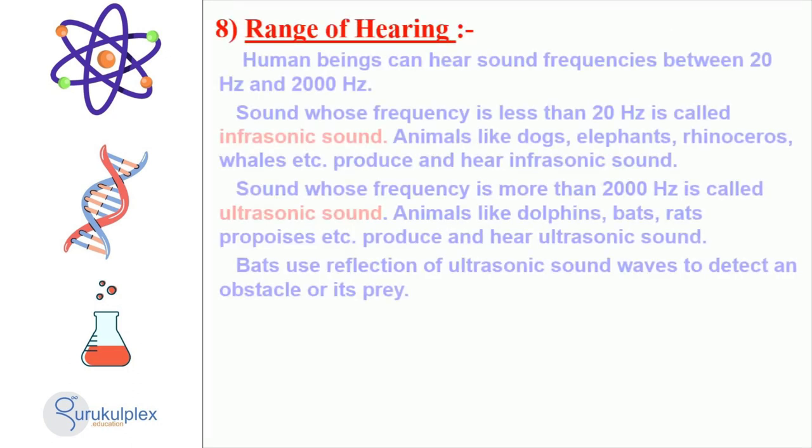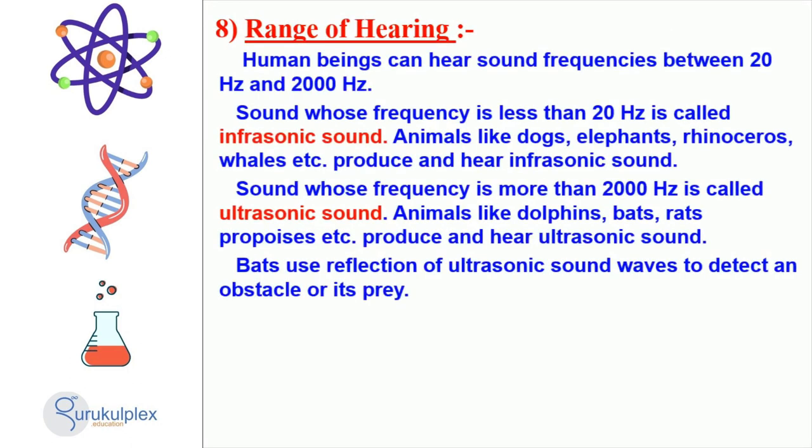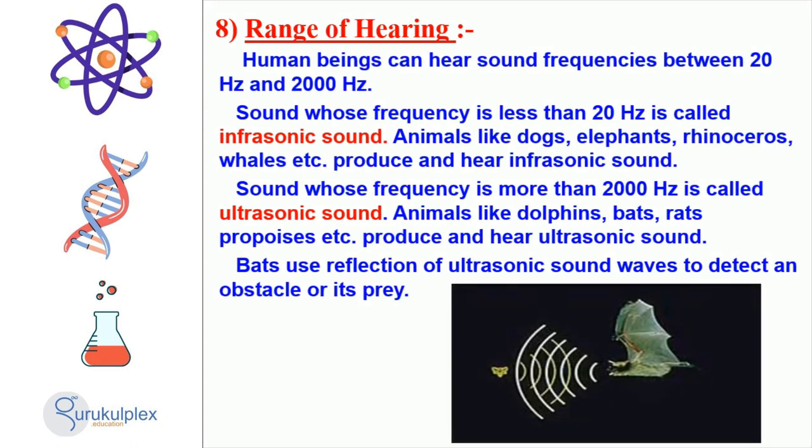Humans possess the unique ability to detect and produce sound, making it an integral part of life. The range of sound frequencies that humans are able to detect is referred to as sonic hearing, and ranges from 20Hz to 2000Hz. Below 20Hz, sound is classified as infrasonic and animals such as dogs, elephants, and rhinoceroses are able to both produce and hear this frequency.